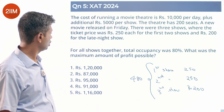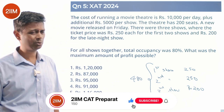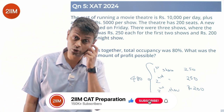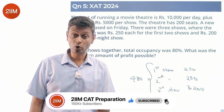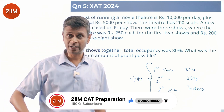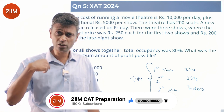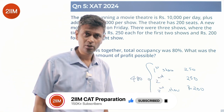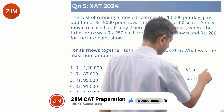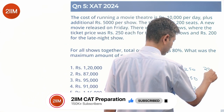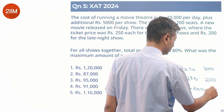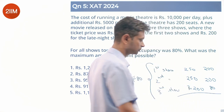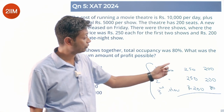What is the maximum amount of profit possible? Since 480 people watched the shows totally, to maximize profit, most people should have watched the higher-priced shows. So 200 people watched the first show, 200 the second, and 80 the late night show.